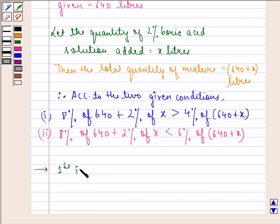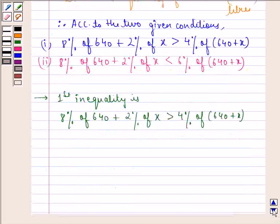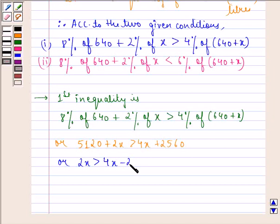Or we can say 5120 plus 2x is strictly greater than 4x plus 2560, or 2x is strictly greater than 4x minus 2560, or minus 2x is strictly greater than minus 2560, or x is strictly less than 1280.